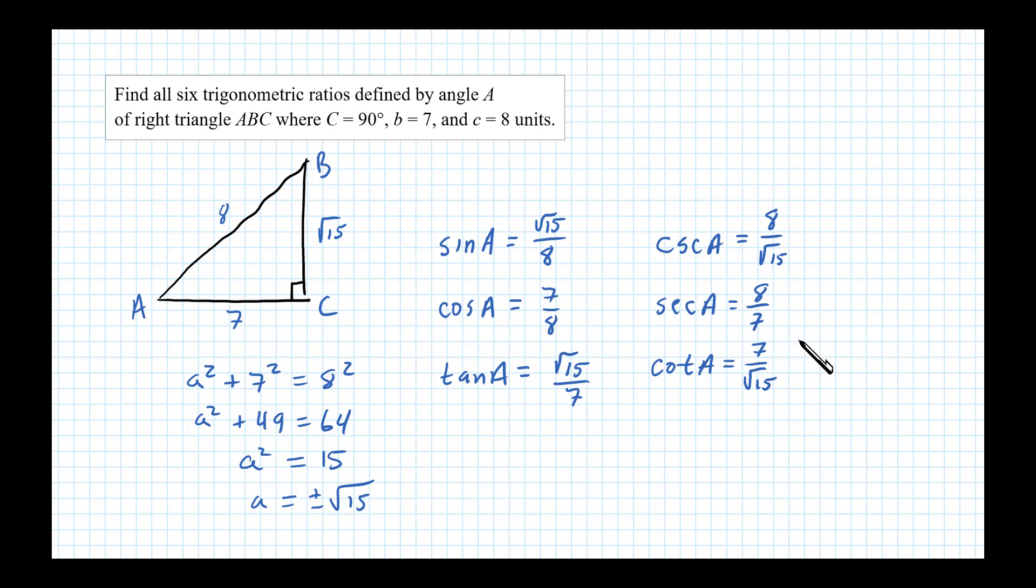Now those are the six trigonometric ratios. I'm not going to rationalize these. Well, I changed my mind, I will rationalize. So multiplying numerator and denominator by square root of 15, in this particular case we get 8 square root of 15 over 15. You can see there's no radical in the denominator.